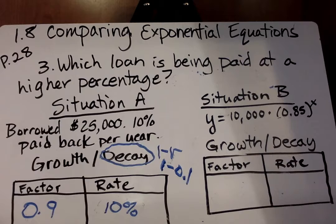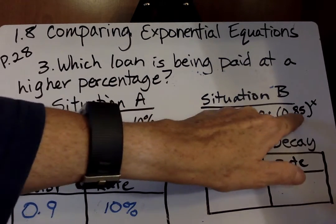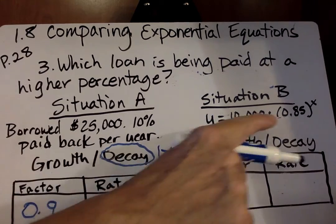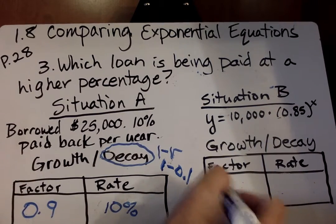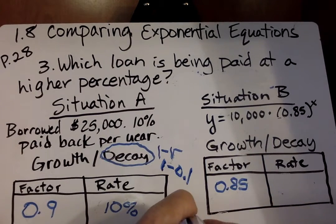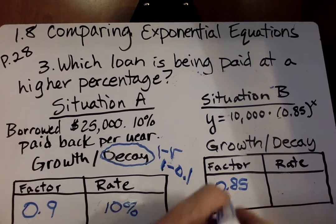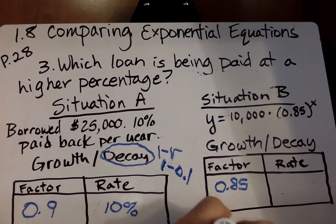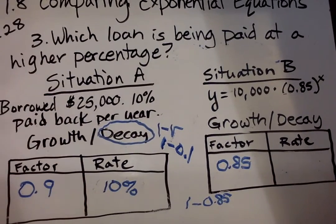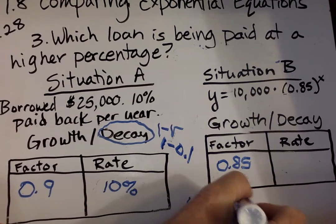Situation B, someone borrowed $10,000 and it's 0.85. So what percent is it being, what's the rate and what's the factor? Well, our factor is already in decimal form so we can go 0.85. Now to figure out the rate, we go 1 minus the factor. 1 minus 0.85. If you do that on the calculator, you get 0.15.